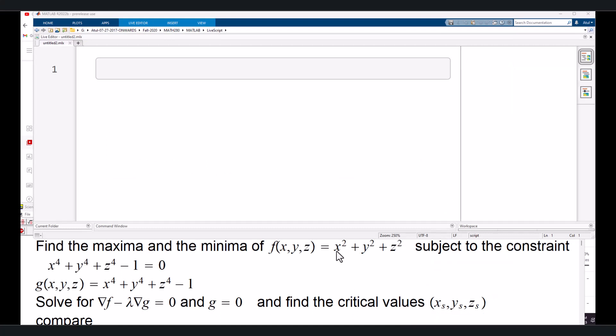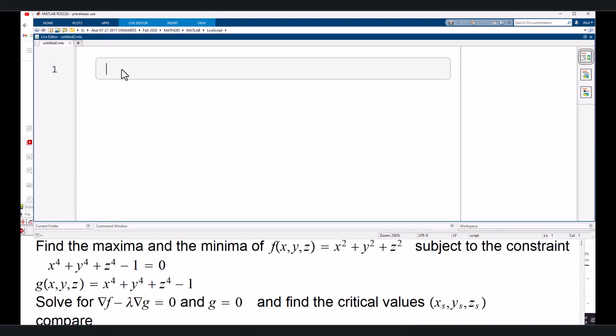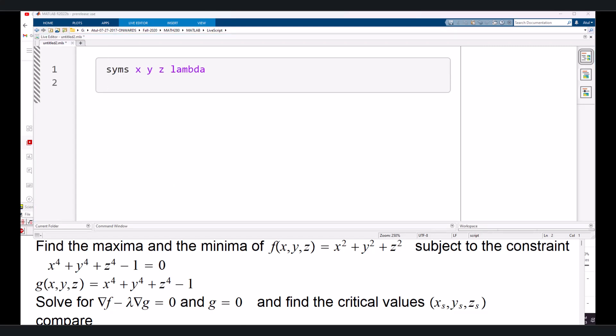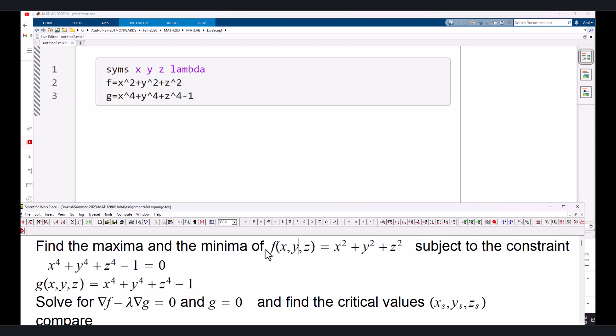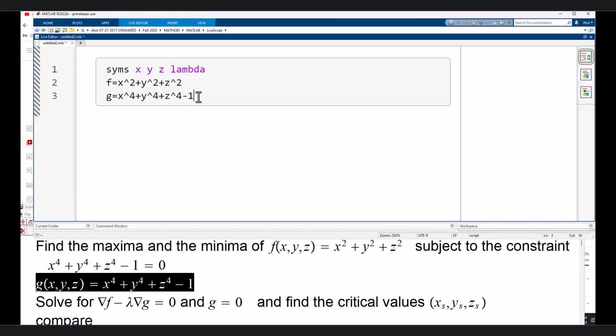So first we notice that we have x, y, z and this lambda as the variables here. So we will define those symbols lambda. And then what I would do is that I shall create the two functions f and g as shown right here. This is our f and this is g. So I wrote those two functions down there.